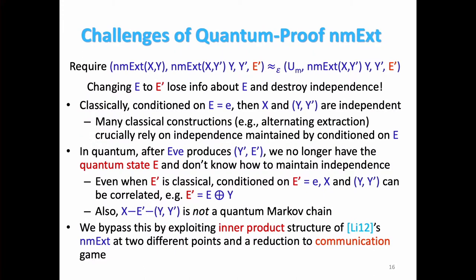And the extractor always needs independence between the inputs. So this is a page to talk more about this. So classically, the side information is not a big problem because people always condition on the side information being some value and X and Y are independent and nice. But in quantum case, if you condition on E', X and Y are not independent. This can be checked by an easy classical case of E' just equal to E plus Y. And if you know quantum Markov chains, you might say maybe we can use some quantum Markov chain structure to argue for independence between X and Y, but we tried a whole bunch of combinations and they either are not quantum Markov chains or they leak trivial information.